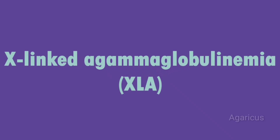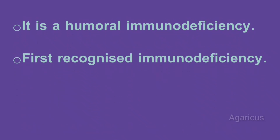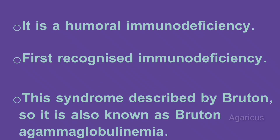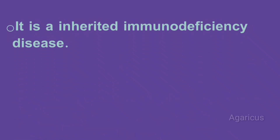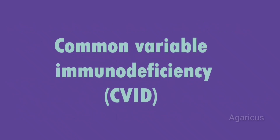The first one is X-linked agammaglobulinemia, in short known as XLA. It is a humoral immunodeficiency and the first recognized immunodeficiency. This syndrome was described by Bruton, so it is also known as Bruton agammaglobulinemia. It is an inherited immunodeficiency disease caused by mutation in Bruton tyrosine kinase, which prevents normal B cell development.